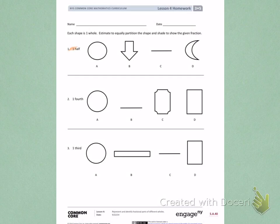On number 1, I need to divide each of these shapes to show one half. Half means two equal parts. On letter A, I can partition this circle many different ways to show two equal parts. My main goal is to make sure that they are equal.